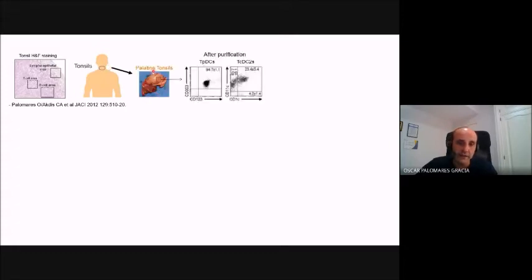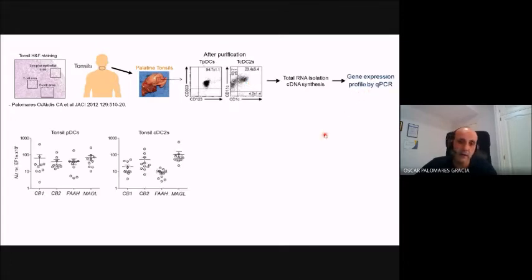Here we isolated tonsil tissues, and from these tissues we purified tonsil plasmacytoid dendritic cells and also type 2 conventional dendritic cells following conventional protocols to assess gene expression profile by quantitative PCR. You can clearly see that both tonsil PDCs and type 2 conventional dendritic cells express all the components of the endocannabinoid system at the mRNA level.